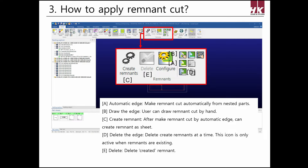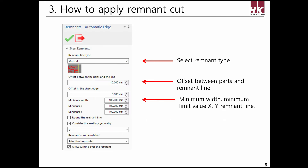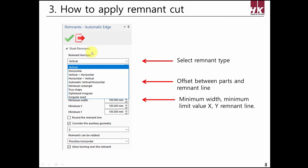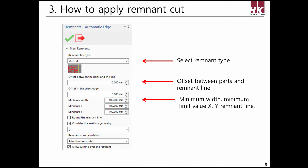Now let's find out the detailed features of each function. First is automatic edge. Select the type of remnant line in the remnant line type field to draw the remnant line automatically. An offset between the part and the line sets how much offset will be made from the part. Minimum width, minimum X and Y set the limit so that remnant lines are not made smaller than the set value.